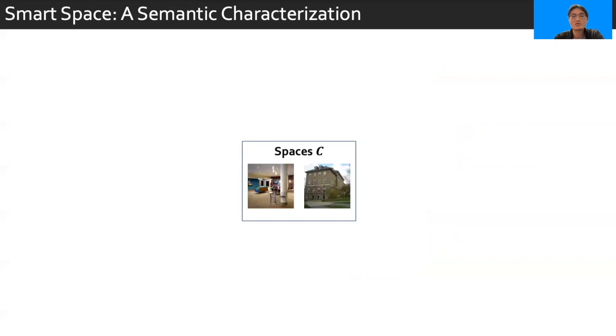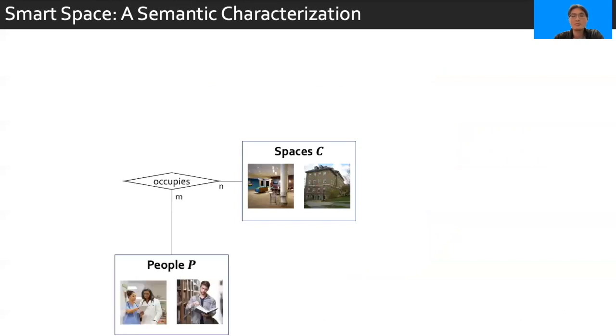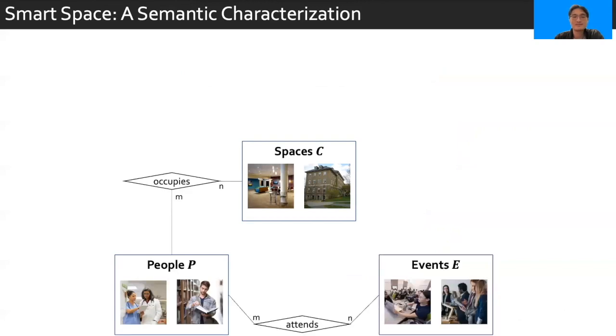In SmartSpec, we characterize a smart space using four basic concepts that are highly interrelated with one another. First, spaces which constitute the geographical layout of the smart space are occupied by people who represent the inhabitants of spaces, and these people attend events which represent the activities of people, and these events are hosted in spaces.